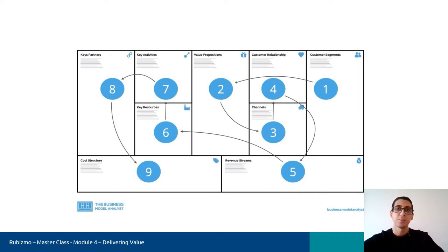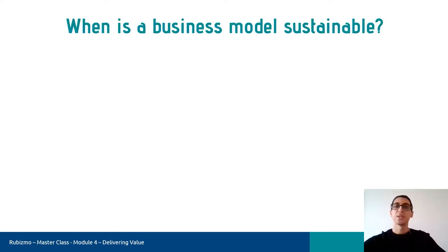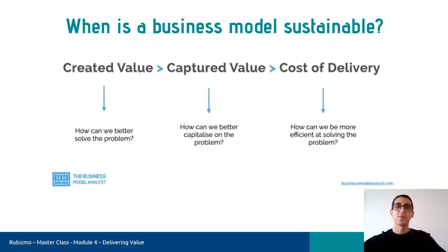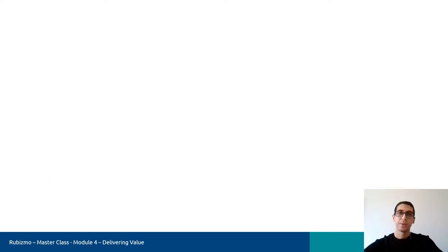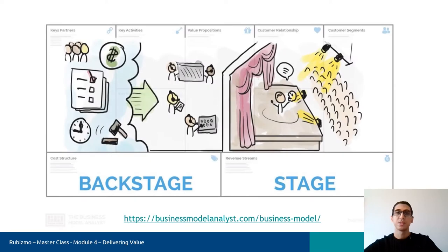Today we want to complete the specific blocks that we have already started. The importance of the left side is that if we want to have a sustainable business model, we have to hold this equation: we have to create more value than we capture, and we have to capture more value than it costs to deliver that value. The left-hand side includes behind-the-scenes production activities — the part facing the customer is called the stage, and the hidden part is called the backstage. Most of the time, we only see the strategies that are visible to us.